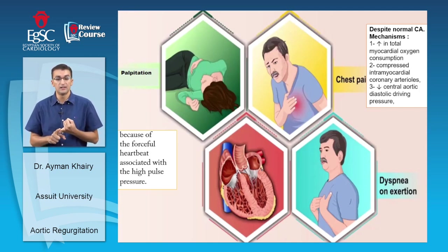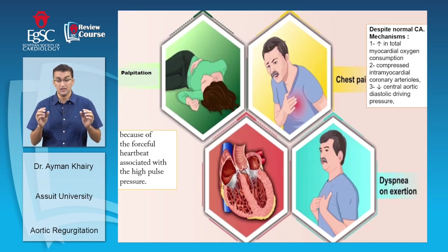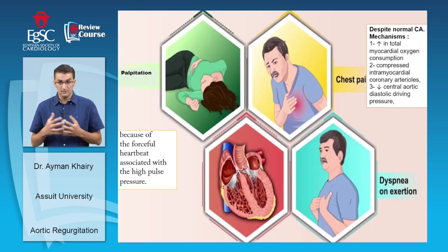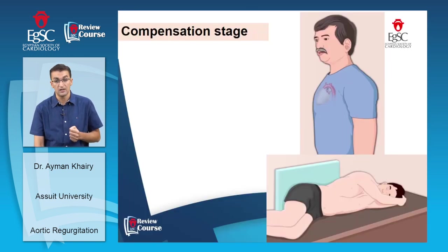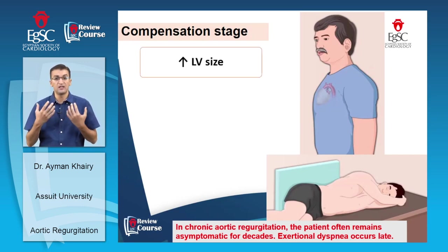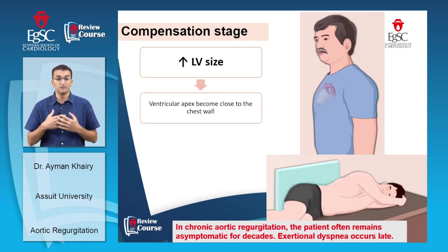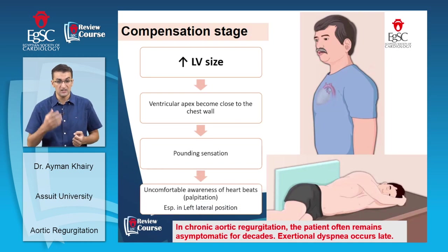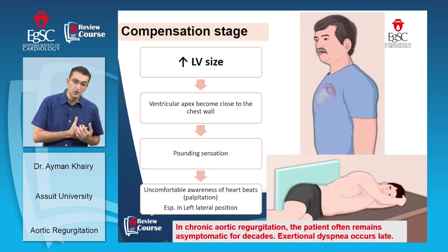Further mechanisms of angina include compressed intramyocardial coronary arterioles and, most importantly, that coronary arteries fill during diastole — and aortic regurgitation also occurs during diastole — resulting in decreased central aortic diastolic driving pressure to the coronary arteries. Dyspnea on exertion occurs late in chronic aortic regurgitation; patients often remain asymptomatic for decades. During the compensatory phase, increased LV size brings the ventricular apex close to the chest wall, causing bounding sensation and awareness of the heartbeat especially in the left lateral position.